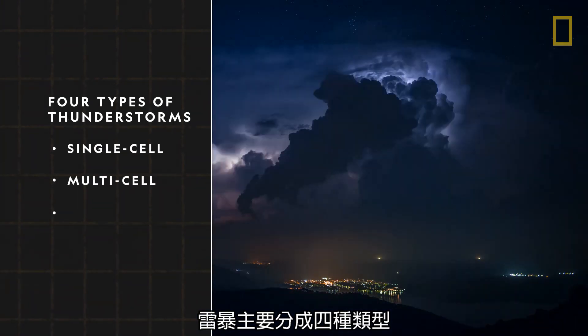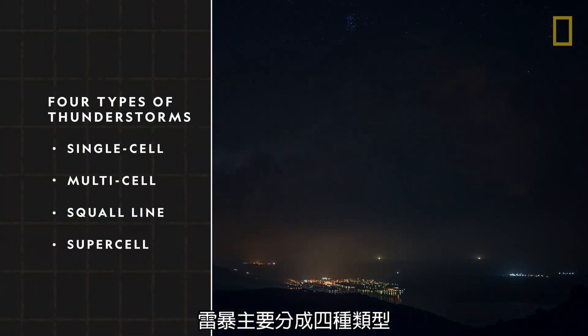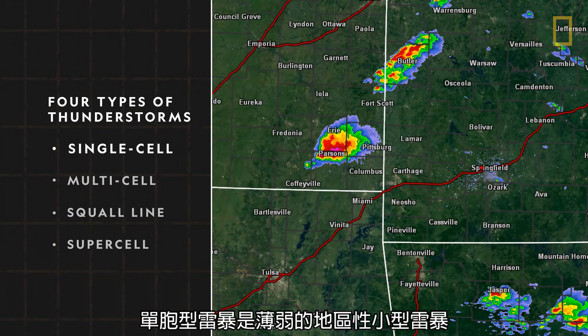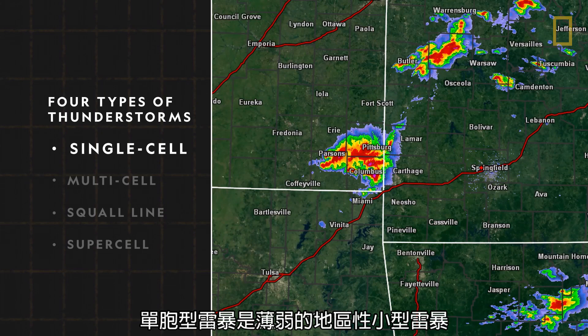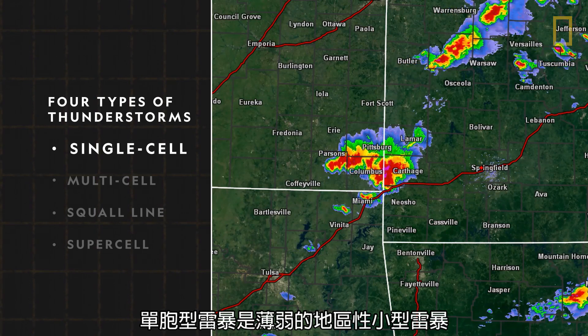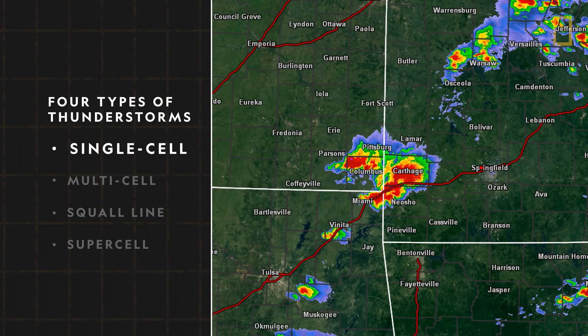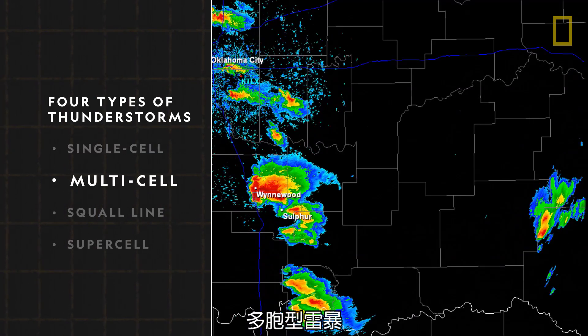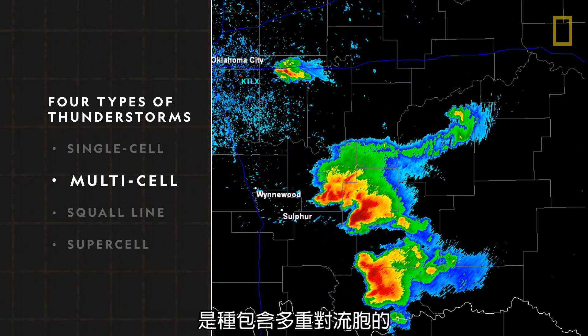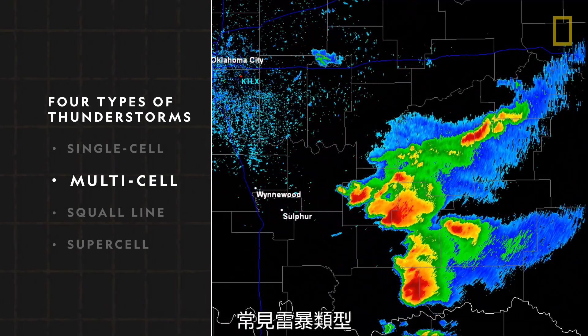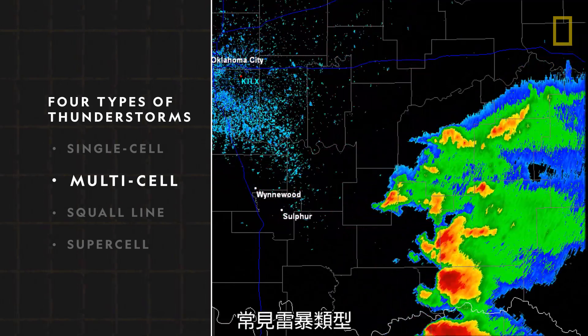There are four major types of thunderstorms. Single-cell, which are small, weak, and isolated storms. Multi-cell, a common type of storm that includes a cluster of thunderstorms.